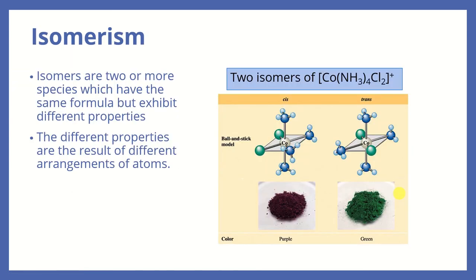This is the structure of a complex. When we have a structure like this, sometimes we can have isomers — compounds with the same formula. Isomers are two or more species which have the same formula but exhibit different properties, because they have different arrangements of atoms inside the structure. For example, these are two isomers of a complex ion with cobalt as the central metal ion, four ammonia ligands, and two chloride ligands.